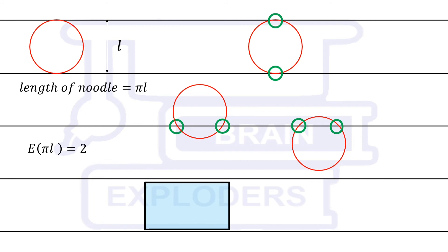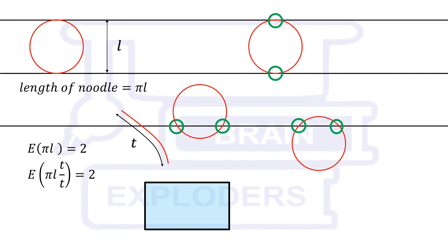But we have to find the probable number of intersections of a noodle of length t. So multiply and divide by t inside E and take pi L over t outside E using our result. We get Et equals to 2t over pi L. This is the solution of Buffon's noodle problem.